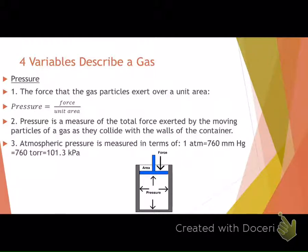We have four standard pressure units: one ATM (atmosphere), 760 millimeters of mercury (mmHg), which is equivalent to 760 Torr, and 101.3 kilopascals (kPa). Torr and mmHg are essentially two different units measuring the same thing, named to honor that scientist.